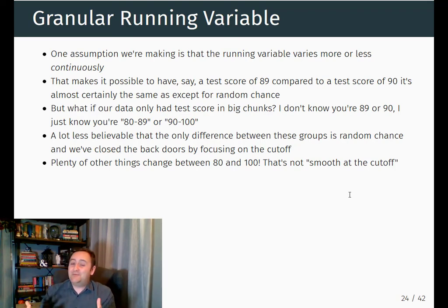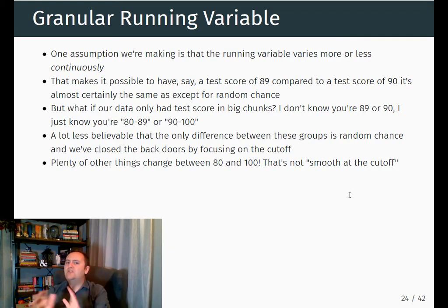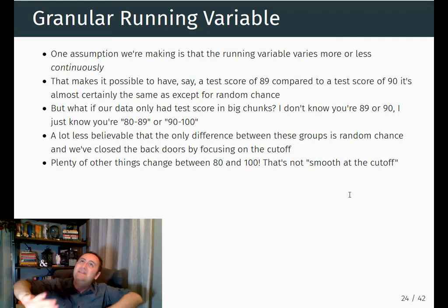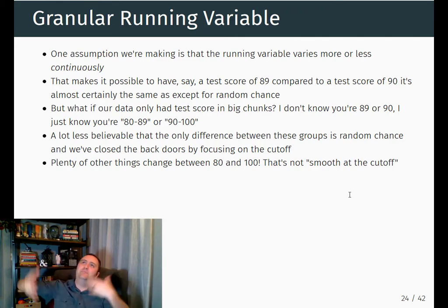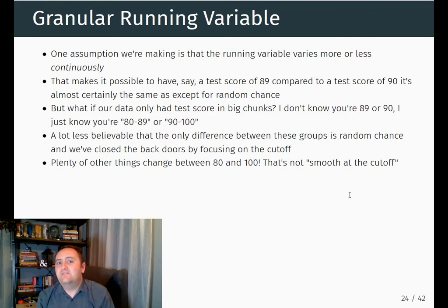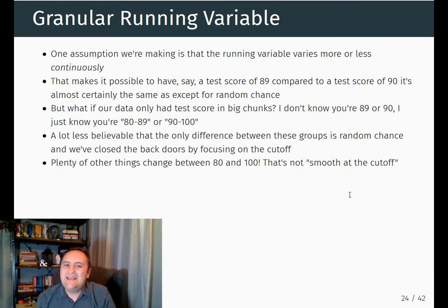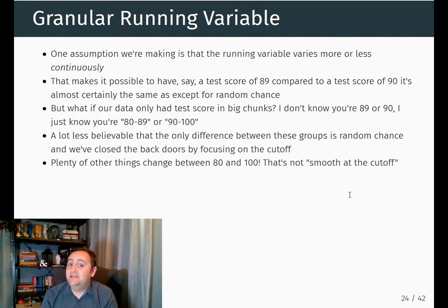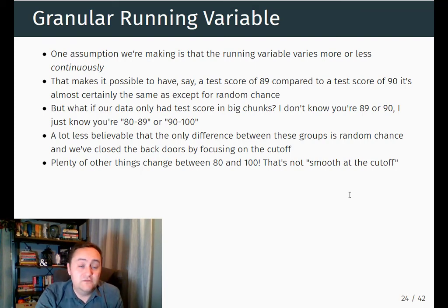So if your running variable is clumped in big groups, it's harder to justify regression discontinuity. The real question is: for the group on either side of the cutoff, can you really say those two groups are basically the same on average and it's just that one got the treatment and one didn't? If you have a granular, lumpy running variable like that, you probably don't want to do regression discontinuity, at least until you understand more advanced methods.